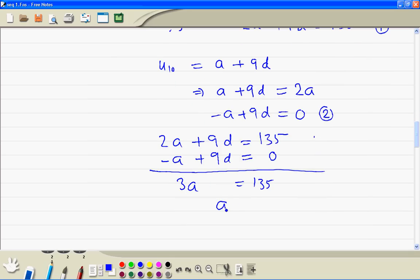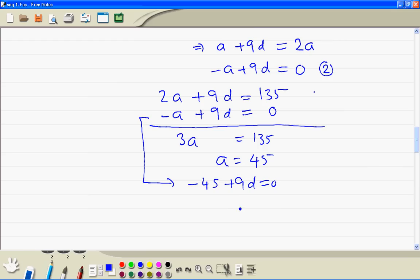Therefore, a is equal to 45. Then from this equation, minus 45 plus 9d is equal to 0. So therefore, 9d is equal to 45 and d is equal to 5.